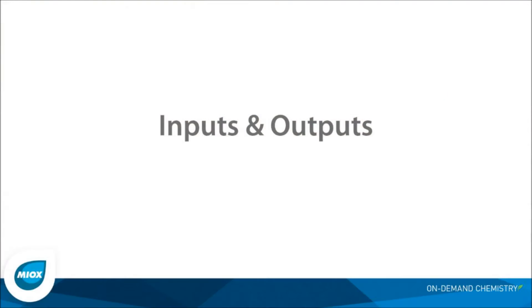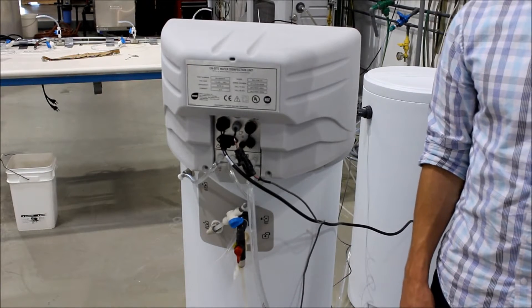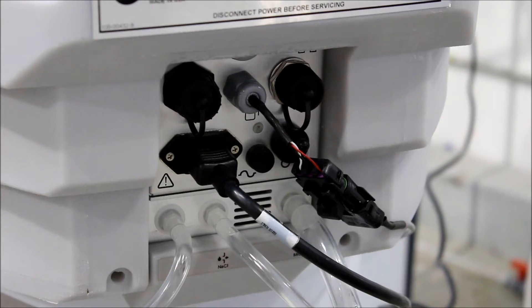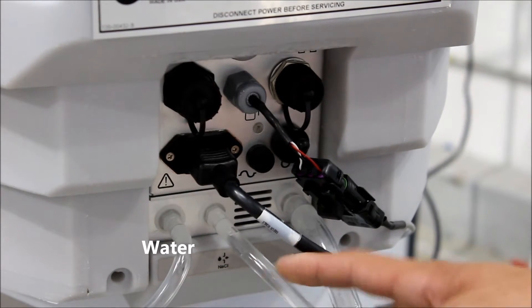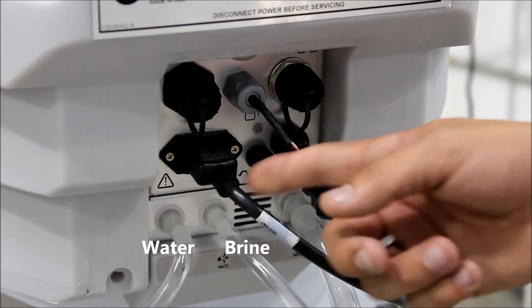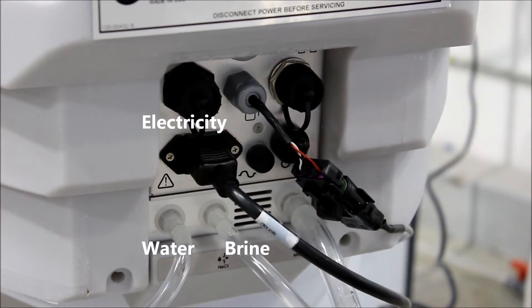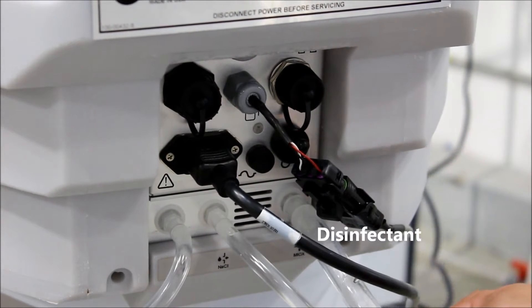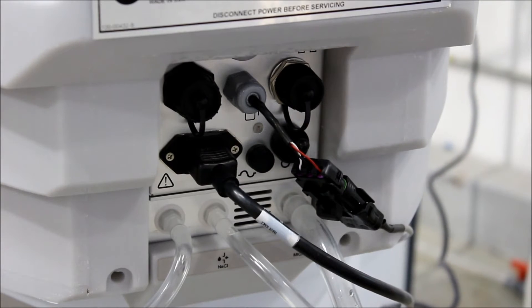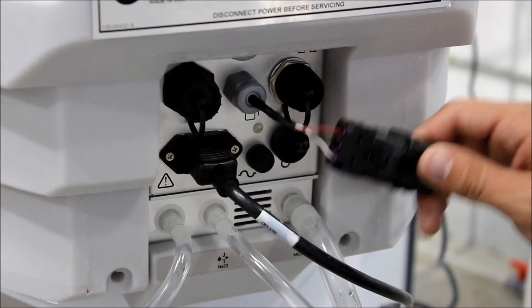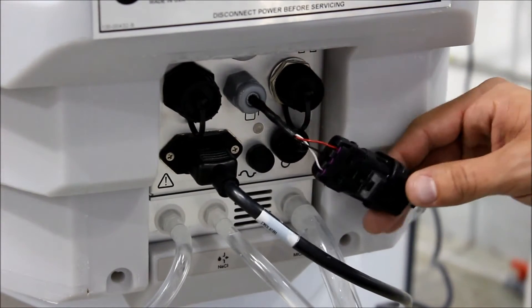Let's take a look inside a MYOX on-site chemical generator. All MYOX on-site generators use the same inputs and outputs. They take in water, a saturated brine solution, and electricity. They output an electrolyzed chemistry. The only other thing that goes in or out of the system is a signal telling it when to run. In this case, it goes through this switch.